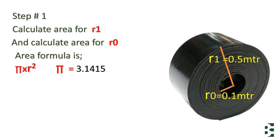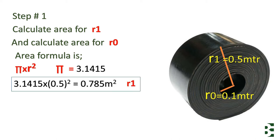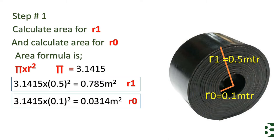As you know, the pi value is 3.1415. By putting our values in the formula, we have the result for R1 and R0.